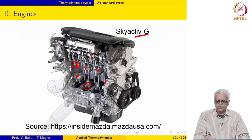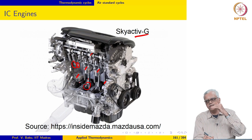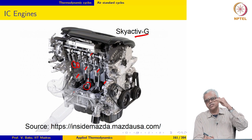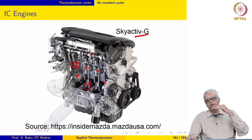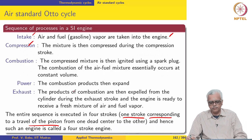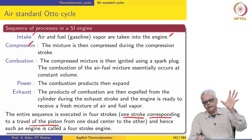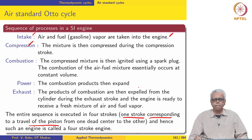The bottommost location of the piston is called the bottom dead centre. One stroke corresponds to movement from either top dead centre to bottom dead centre or bottom dead centre to top dead centre. During the intake stroke, air and fuel vapour are taken in, and in the compression stroke this mixture is compressed.